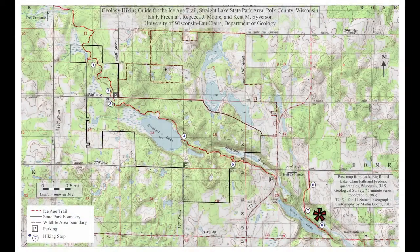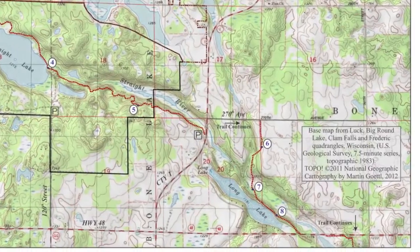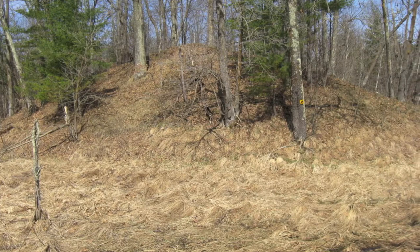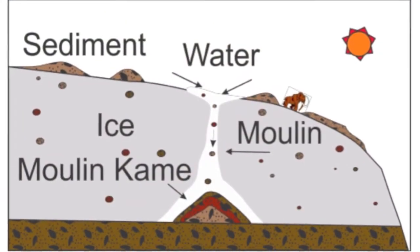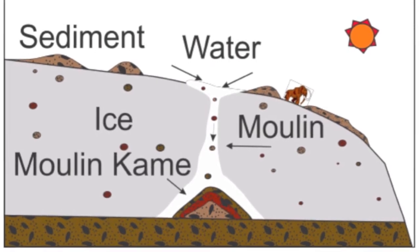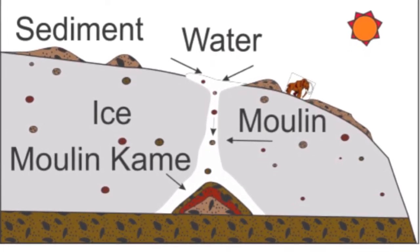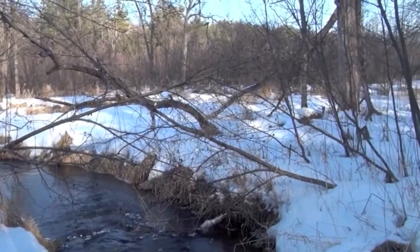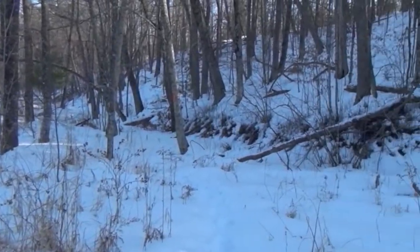A Moulin Kame is located within the tunnel channel north of State Highway 48. This landform is a small conical hill that rises nearly 20 feet above the poorly drained tunnel channel floor. The Moulin Kame formed as meltwater and sediment flowed down a vertical shaft called the Moulin in the glacier ice. Sediment was deposited at the base of the Moulin to form a conical hill.